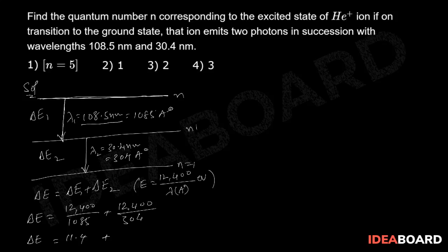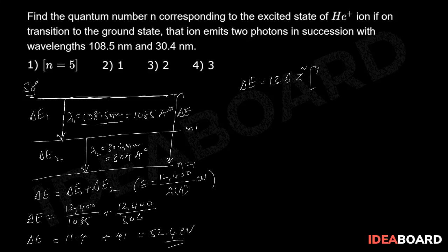Simplifying: 12400/1085 ≈ 11.4 eV and 12400/304 ≈ 41 eV, giving a total energy release ΔE = 52.4 electron volts. For a transition from quantum state n to the ground state, we use ΔE = 13.6 Z² × (1/nf² − 1/ni²).